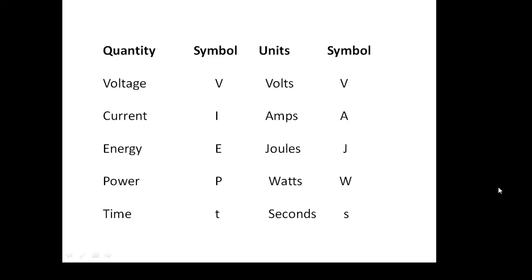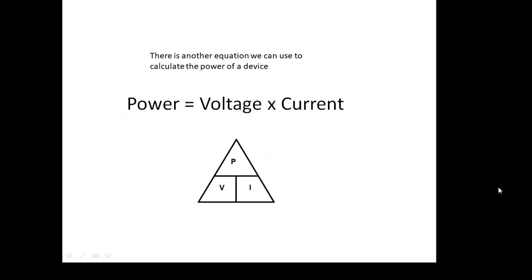There's another equation that we're going to look at in a bit for working out power: power is voltage times current (P = V × I). If you know the voltage across a device—and if it's plugged into the mains, that would be 230 volts—and you know the current, you can work out the power. Or if you know the power and the voltage, you can work out the current. Now, why would you need to work out the current?